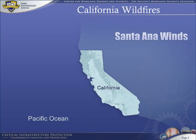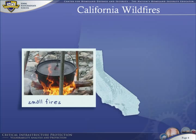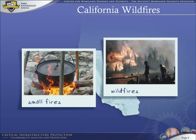Careless campers, arsonists, and accidents cause many fires that are quickly extinguished. But once in a while, these fires explode, spreading like wildfire from the mountains to the ocean. Californians love the outdoors, and many houses are adjacent to forests, which produces inevitable casualties.